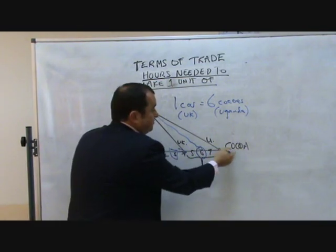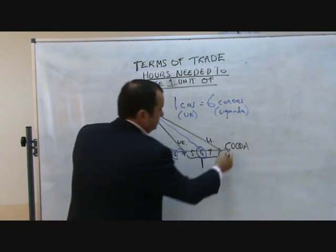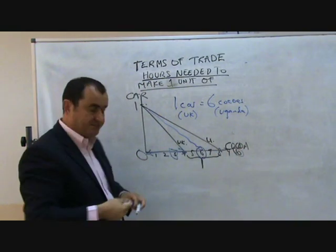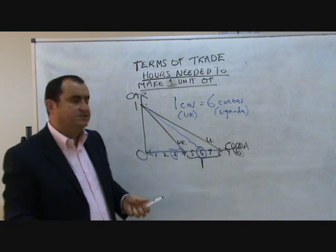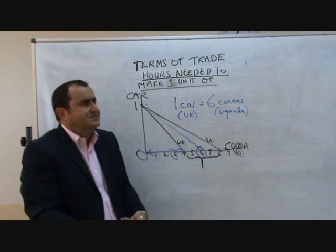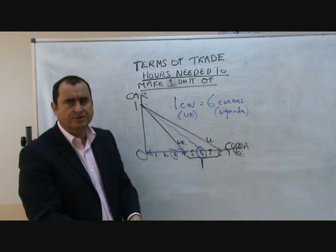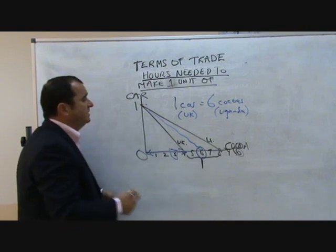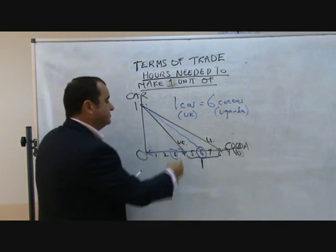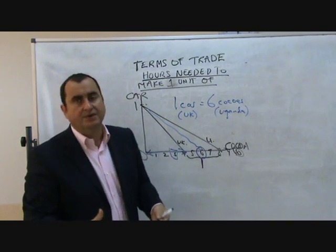Beyond the other point — above eight — it would be unacceptable to Uganda. Let's say Britain wanted a price of ten cocos for every car it sells. Uganda would say: this isn't acceptable. We can make our own cars by giving up eight cocos, so why would we sell you ten cocos just to get one of your cars? The only range of terms of trade acceptable to both sides — for trade to go ahead — lies within this range.